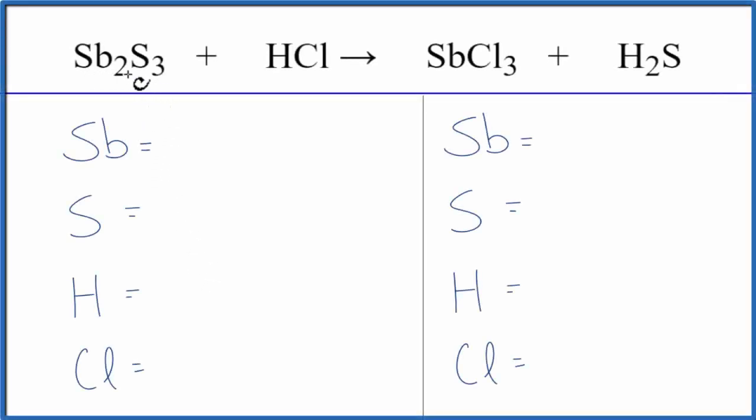To balance this equation, Sb2S3 plus HCl, let's count the atoms up on each side of the equation. We have 2 Sb, 3 S, 1 H, and 1 Cl.